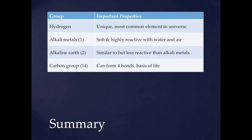Group 14 — notice I skipped a whole bunch of groups. That's because either they're just not as critically important to chemistry in general or their properties are just not all that interesting. Carbon group — this is carbon and silicon. By the way, it's silicon — not silicone. Silicone is a plastic; silicon is the element. It can form four bonds, and this is the basis of life.